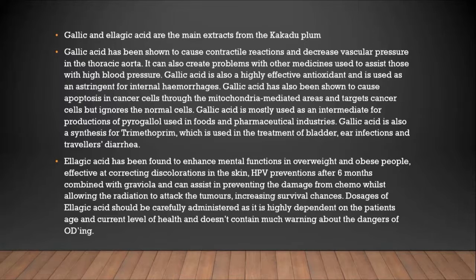Gallic acid has been shown to cause apoptosis in cancer cells through mitochondria-mediated pathways, targeting cancer cells but ignoring normal cells. Gallic acid is also mostly used as an intermediate for the production of pyrogallol, used in food and pharmaceutical industries.